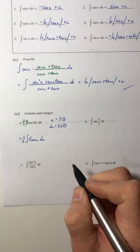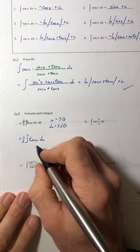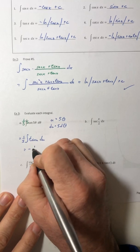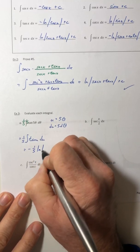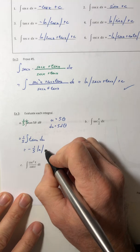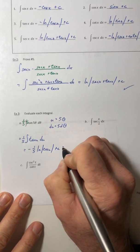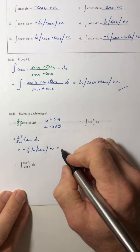So now I have one fifth times the integral of tangent of u du. So negative one fifth ln of cosine of u plus c, and then switch it back in terms of theta.